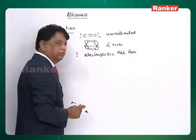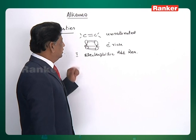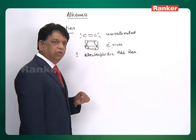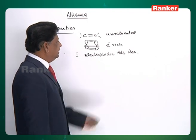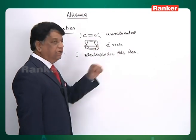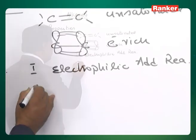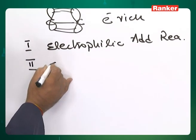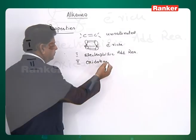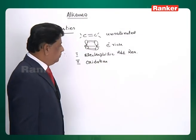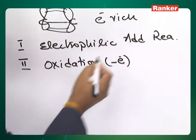Electrophilic addition reaction is the most important characteristic reaction of alkenes. Because they are electron-rich, they are going to lose electrons, so electrophiles will attack on the alkenes. Being unsaturated, they undergo addition reactions. However, they also undergo oxidation — the concept of oxidation being loss of electrons.